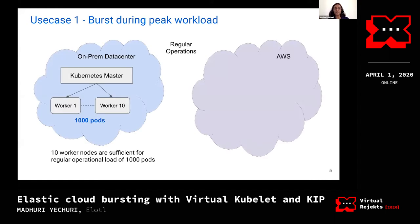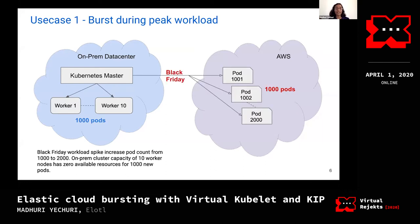The first one is bursting during peak workload. Let's take an example where you have all of your Kubernetes clusters on an on-premise data center. You have your Kubernetes master and 10 worker nodes reporting to it. You've estimated that at peak capacity you're going to run 1000 pods, and your 10 worker nodes are running at 90 to 100% CPU and memory capacity for those 1000 pods. Then Black Friday comes along and your peak capacity need suddenly goes up from 1000 pods to 2000 pods — there is no capacity on your on-premise data center to run these 1000 extra pods.